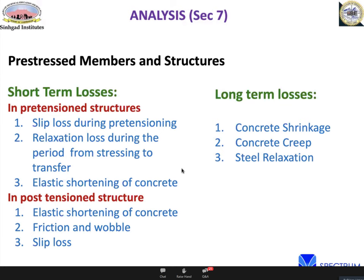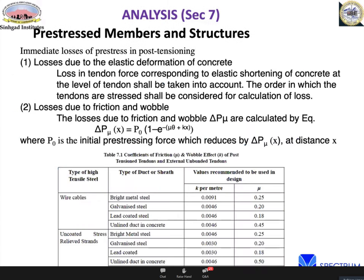The code describes short-term and long-term prestress losses. Short-term losses in post-tensioned structures include friction and wobble losses (using the formula with mu values and wobble coefficients specified for different duct types), elastic shortening losses for multi-cable systems, and anchorage slip losses. Over the last 20 years, corrugated HDPE ducts have largely replaced bright metal or galvanized sheet ducts. The code gives mu values and wobble coefficients for each duct type.